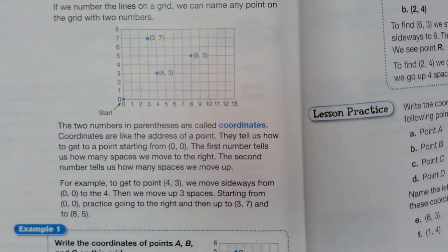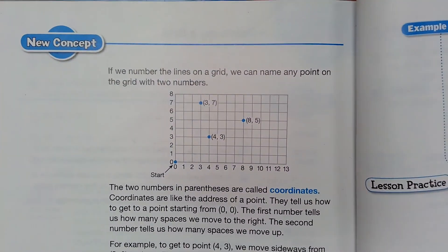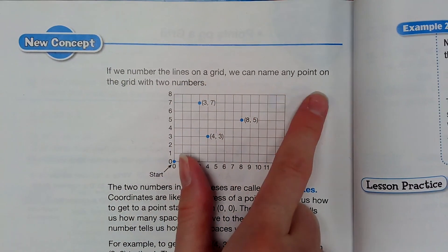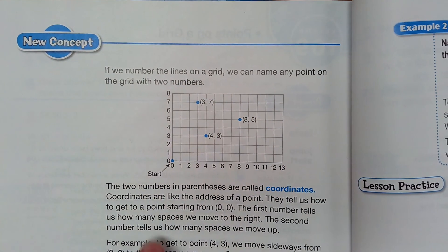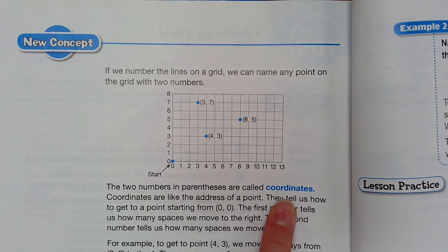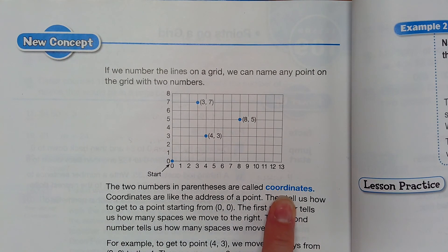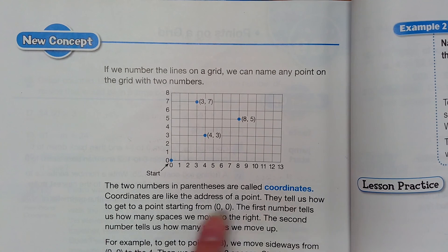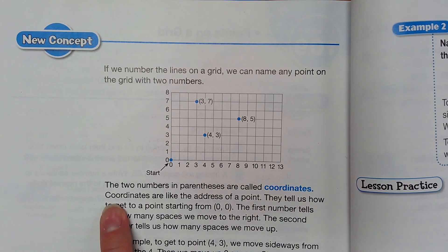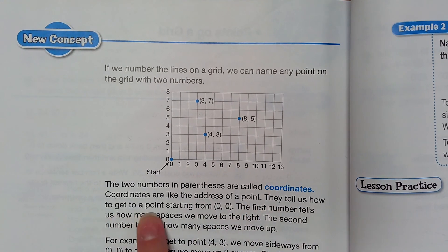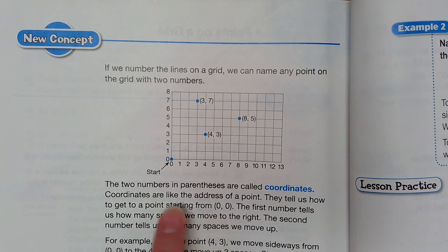At the top it says new concept. If we number the lines on a grid, we can name any point on the grid with two numbers. The two numbers in parentheses are called coordinates. So put your finger on that blue word in your book and say the word: coordinates.